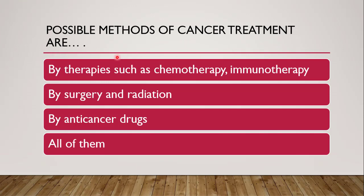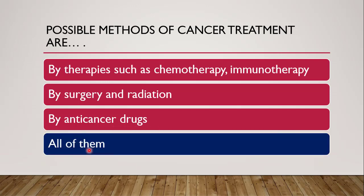Next question: possible methods of cancer treatment are — chemotherapy/immunotherapy, surgery and radiation, anti-cancer drugs, or all of them? The correct answer is all of them. Anti-cancer drugs can be used alone, in combination with surgery or radiation, or separately. Chemotherapy is simply anti-cancer drug therapy using various chemicals — the name is different but refers to the same thing.